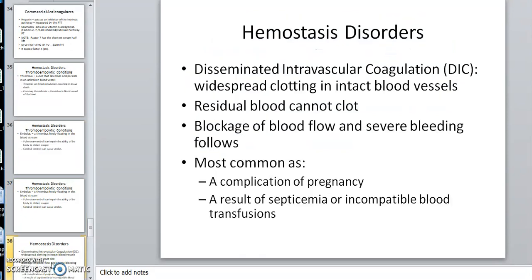Hemostasis disorders — DIC, disseminated intravascular coagulation. This can happen heavily in obstetrics. For example, when the placenta did not detach properly, substances released into the circulation caused massive clotting. The problem with DIC is that you clot very quickly but then consume all the clotting factors. So the patient starts clotting fast, but within minutes all clotting factors are consumed, and now they're bleeding too much.